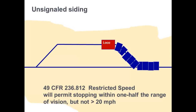Here we see an unsignaled siding. Unsignaled sidings are relatively common in single-track territory. They are built, like any siding, to add capacity to the rail line and flexibility of operations. The signals are not included to save money. Without signals, the train must travel at restricted speed on and through the siding. Per 49 CFR Part 236.812, restricted speed is a speed that will permit stopping within one-half the range of vision, but not exceeding 20 miles an hour. Unsignaled sidings can gobble up capacity on the main line, especially if the railroad is curved and the train engineer can't see very far.